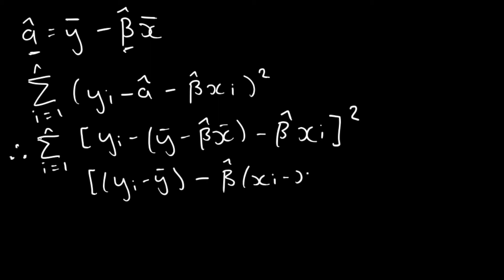If you expand the rearranged expression it gives you the exact same thing — all we're doing is algebraic rearrangement. This expression is then squared, and the summation applies over all observations. Our next step is to minimize this by differentiating and taking the first-order conditions, setting the derivative equal to zero, and solving for beta hat — that gives us the value that minimizes the equation.